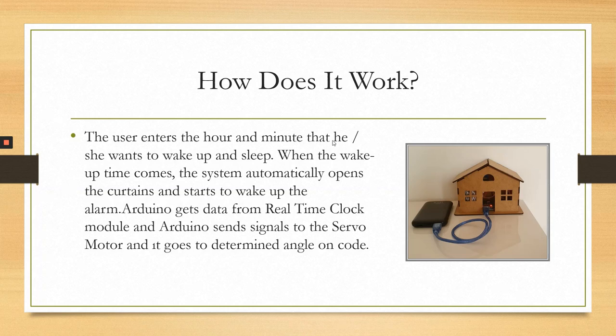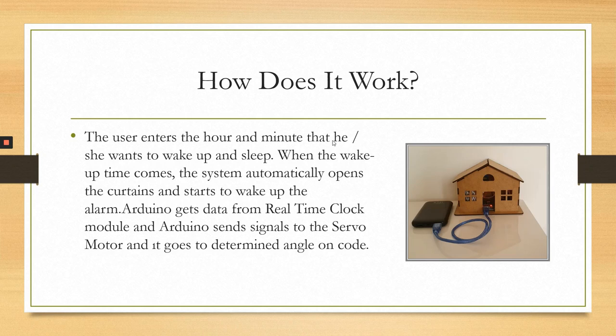Arduino gets data from the real-time clock module and sends signals to the servo motor, which moves to the determined angle in the code. For example, at 10 AM, the servo motor goes from 0 degrees to 180 degrees and the curtains open. At 10 PM, the servo goes from 180 degrees to 0 degrees and the curtains close.